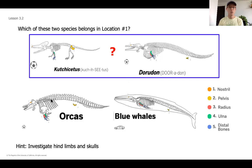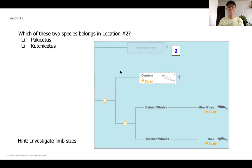Next, we're going to keep working backwards to the next branch — looking at a Pachycetus and a Cuchicetus. Because the Dorudon is a recent relative closely related to this spot too, we might want to compare these two species to the Dorudon. I've got the blue whale and the Dorudon here to take a look at. Pause the video and think about which of these two species is going to go into location number two, looking at all the structures.